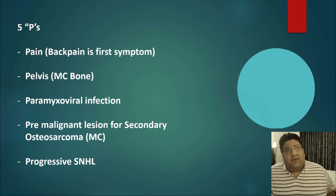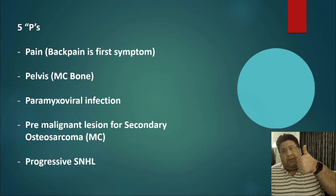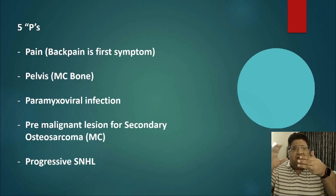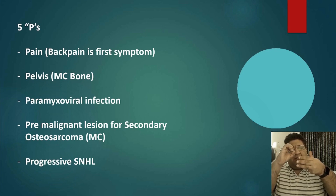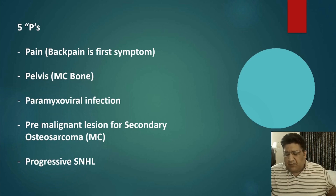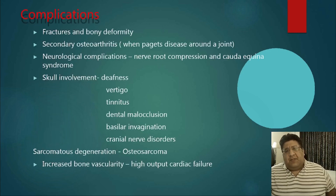A summary of this topic can be addressed as five P's: the most common bone is P for pelvis; the first symptom is P for pain in the back; it is the most common pre-malignant lesion for secondary osteosarcoma; progressive sensorineural hearing loss occurs due to cranial nerve compression — in the plastic phase, excess formation reduces the diameter of cranial foramina, compressing the vestibulocochlear nerve; and the fifth P is paramyxovirus, with a connection to the paramyxoviridae family.